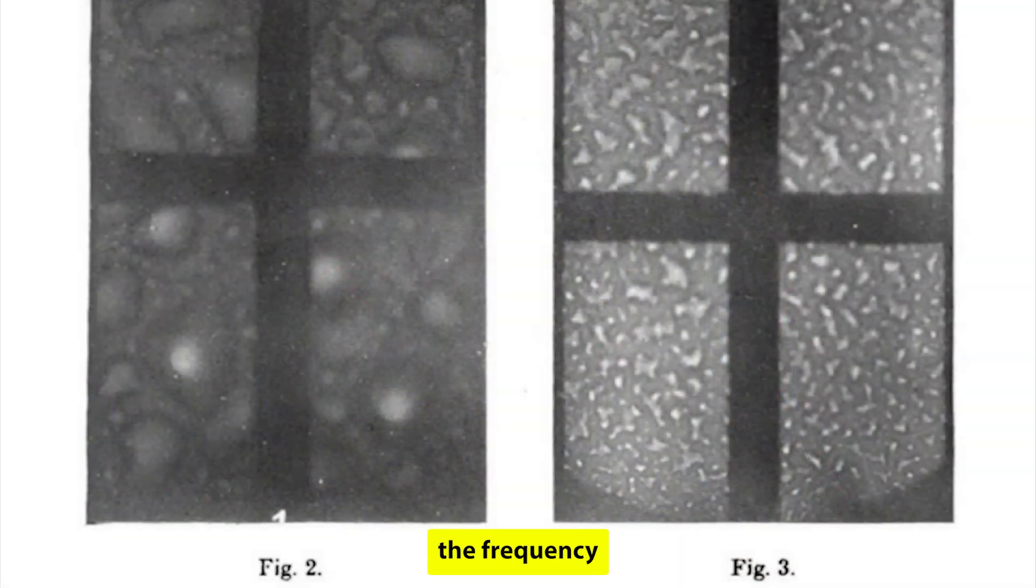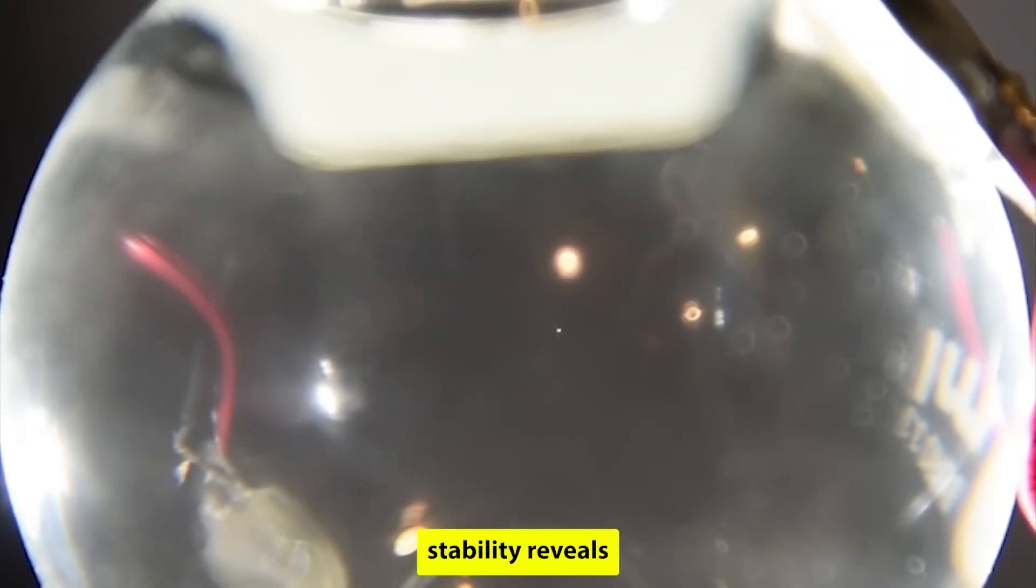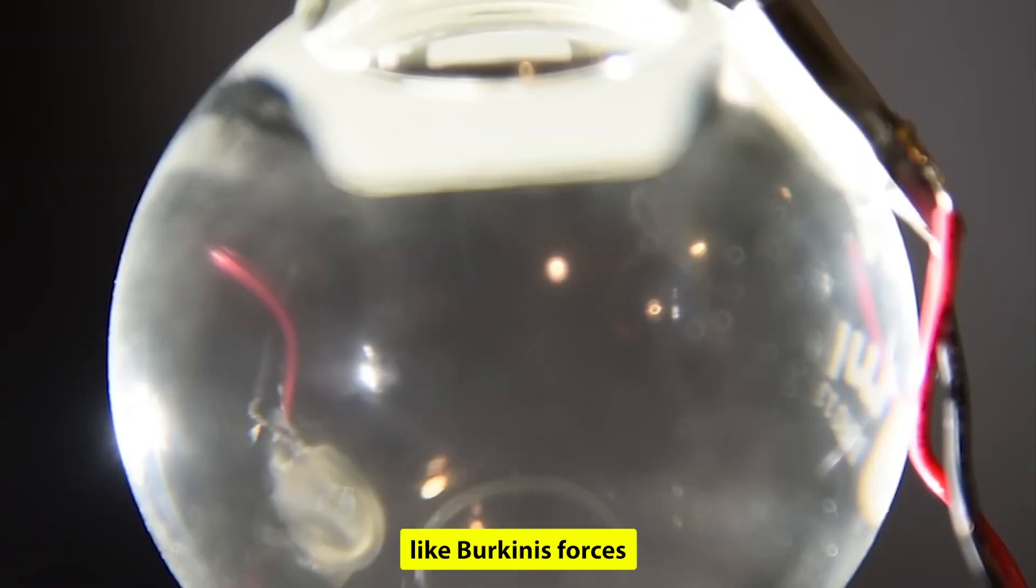Single-bubble sonoluminescence also exhibits remarkable stability in terms of both period and position. In some cases, the frequency of light flashes proves to be more consistent than the rated frequency stability of the oscillator producing the sound waves driving the bubbles. However, analysis of the bubbles' stability reveals significant geometric instabilities caused by factors like Bjorknes forces and Rayleigh-Taylor instabilities.